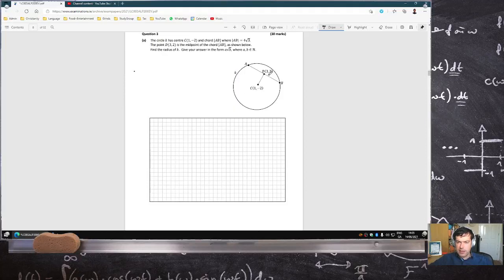The circle K has that center and that chord AB, where AB is given as 4√3. The point D is the midpoint of the chord as shown by the radius K.